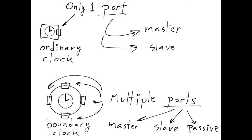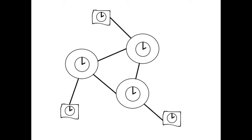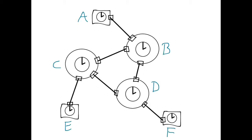Let's look at a quick example to see how these states are used to establish a hierarchy. We have a network with boundary clocks and ordinary clocks. In this network, each link interconnects a pair of ports. The algorithm that is executed to establish the master-slave hierarchy is executed by these ports. To get a sense of how this works, let's label the clocks. Assume that the clock labeled A is established as the grandmaster clock and that the clock hierarchy is the following.